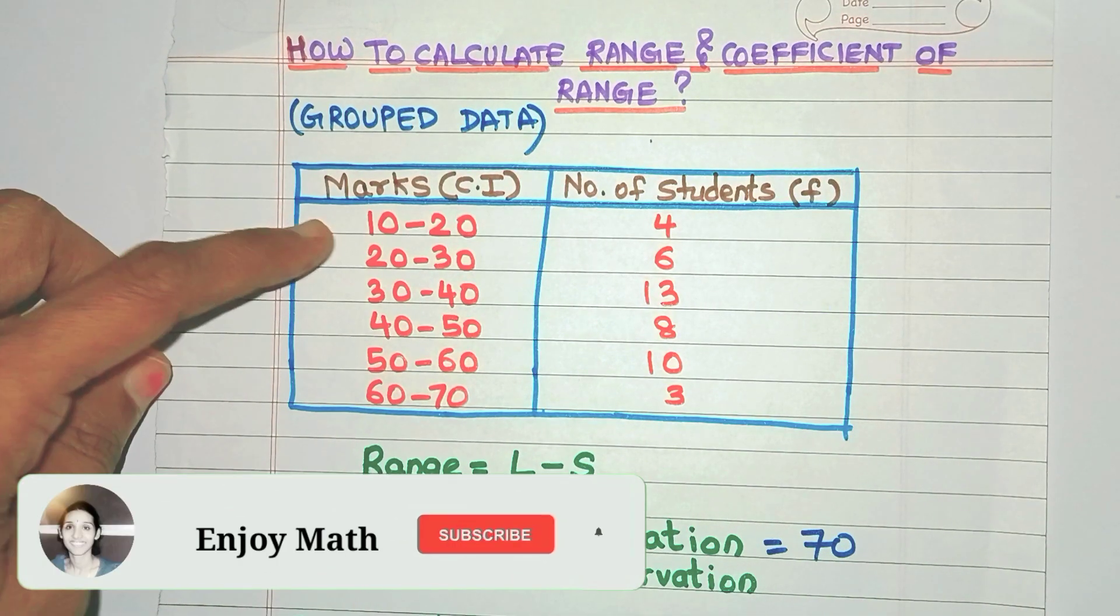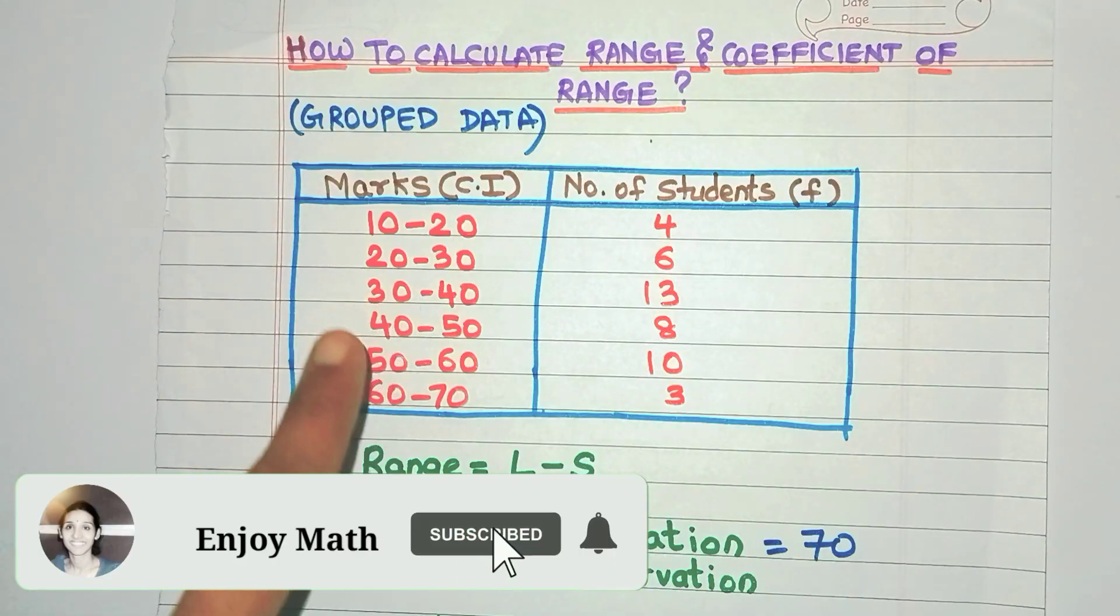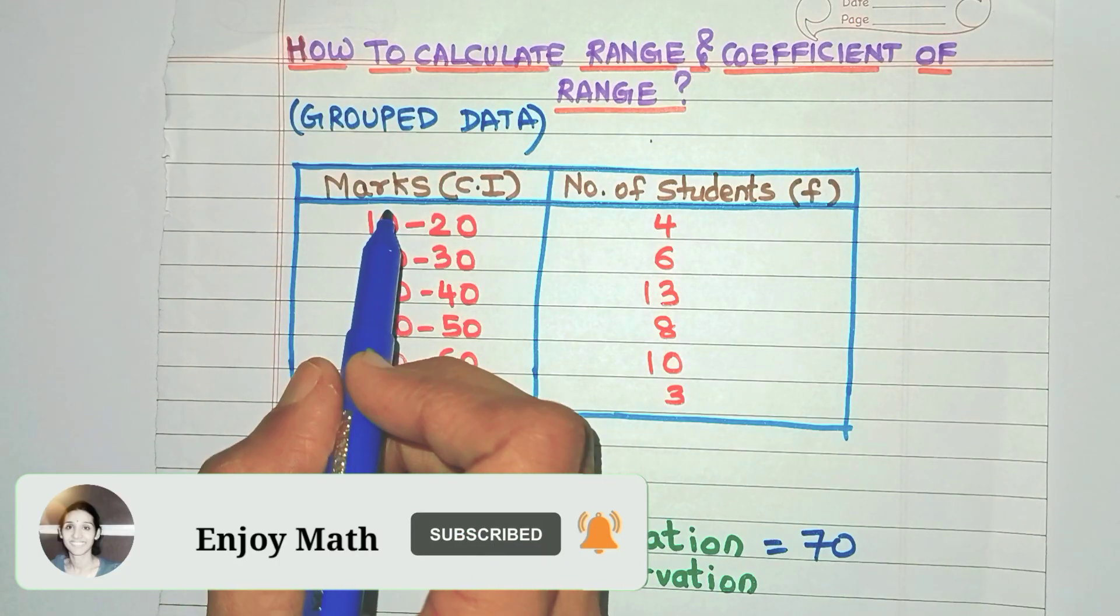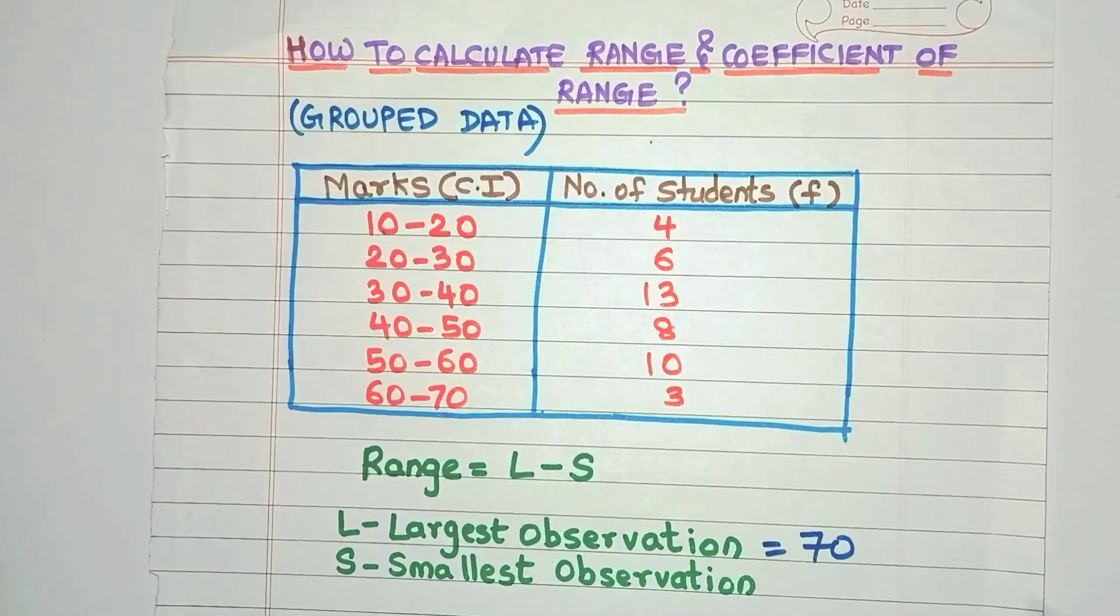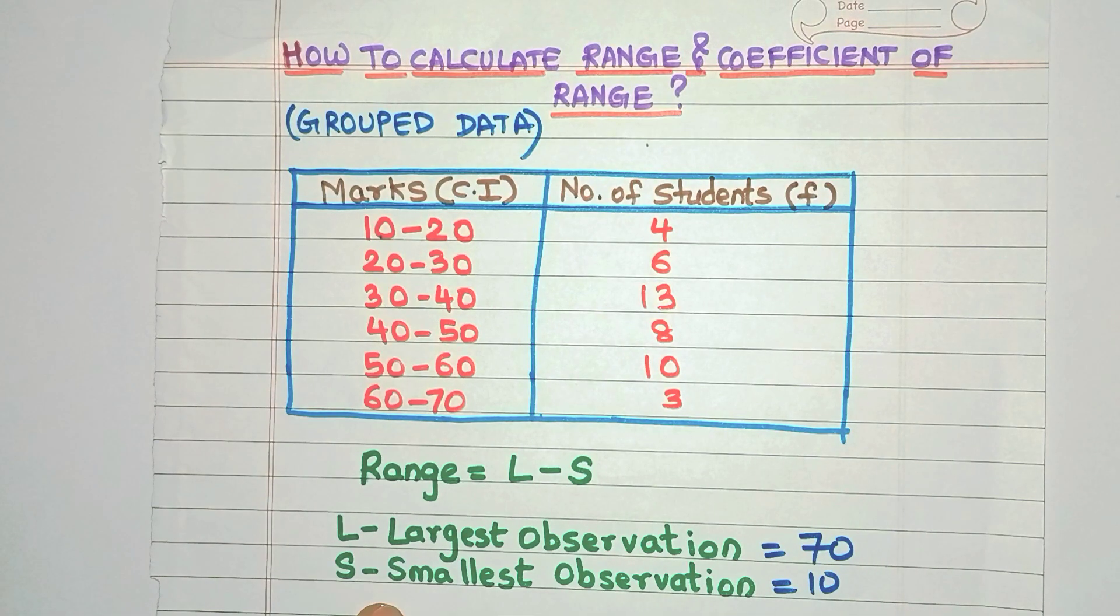Now let's come to the first class interval 10 to 20. What is the lower limit? Yes, it is 10. So will there be any data which will be lesser than 10? Not at all. So we can say that 10 is the smallest observation or S.